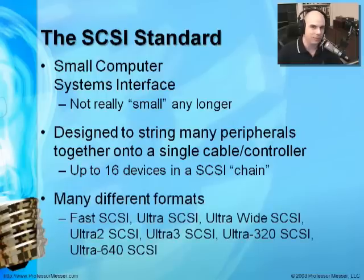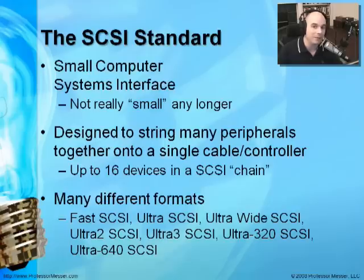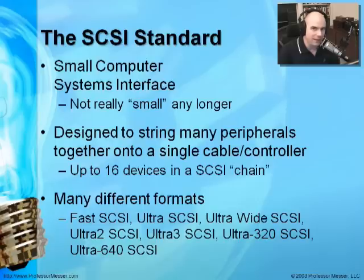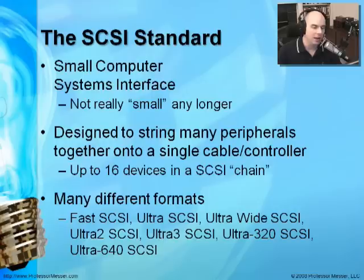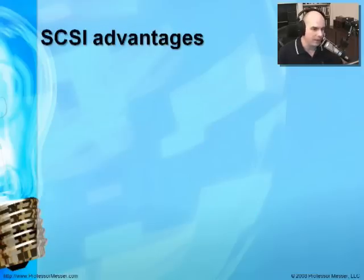There are a lot of different kinds of formats for SCSI since it's been around for a long time. You'll hear these different formats: Fast SCSI, Ultra SCSI, Ultra Wide, Ultra 2, Ultra 640, and many other kinds of SCSI interfaces. Just remember that if you have an Ultra Wide SCSI interface, it needs to operate with Ultra Wide SCSI peripherals. You want to make sure you check the documentation of your SCSI controller and your SCSI components to make sure they're compatible with each other.